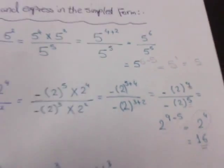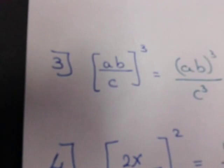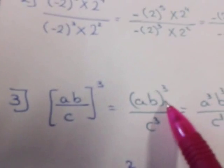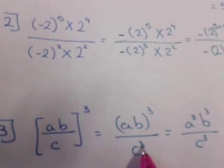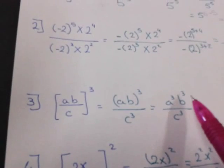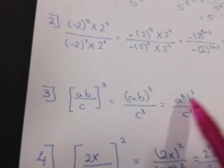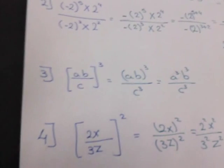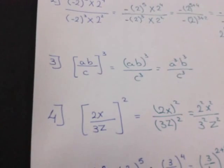Number three: a times b over c, all to the power three. I distribute the power three: first to a times b and to c, giving (ab) to the power three over c to the power three. Then I distribute the power three to a and b separately: a power three times b power three over c power three.